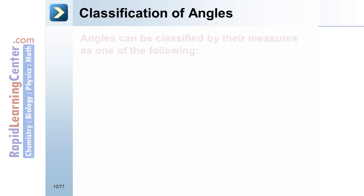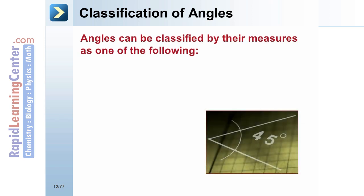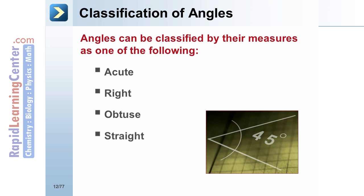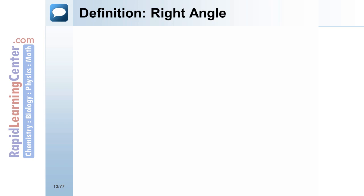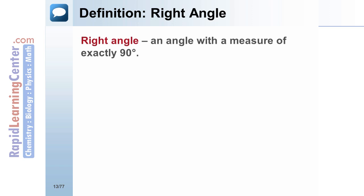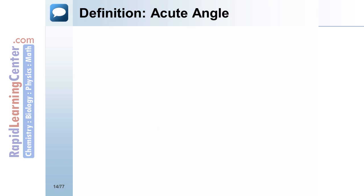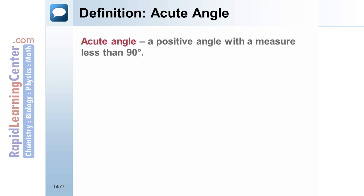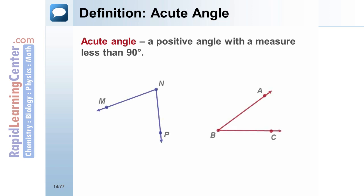Classification of Angles. Angles can be classified by their measures. If the measure of an angle is exactly 90 degrees, it is called a right angle. If the measure of an angle is less than 90 degrees, it is called an acute angle. Angles MNP and ABC are acute angles.